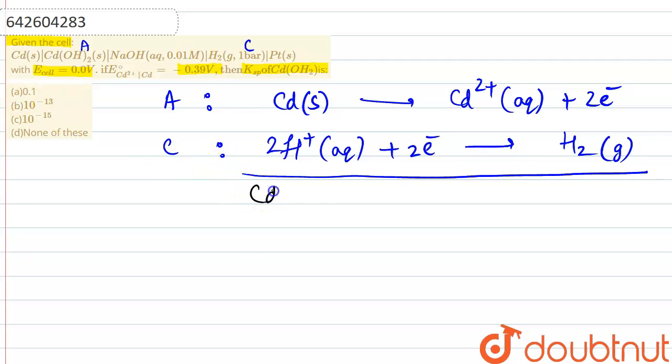If we write the net reaction that is taking place here: cadmium with 2H+ ions in the aqueous is basically liberating the cadmium 2+ ions in the aqueous state plus hydrogen gas. The pressure is given as 1 bar in the question only. Concentration of ions is also given.